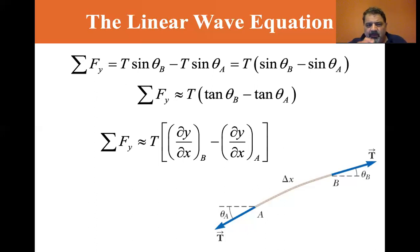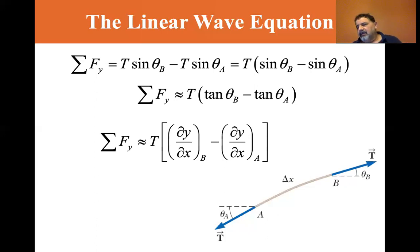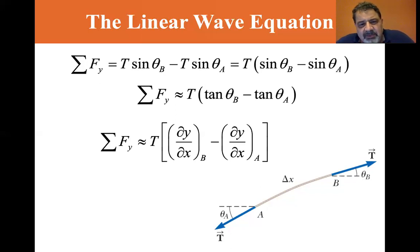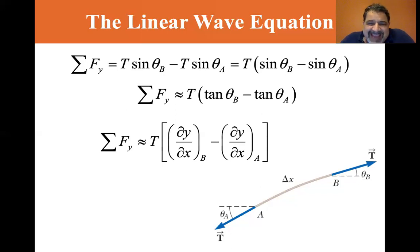If you imagine undergoing an infinitesimal displacement, you have a little vector that's dx·i plus dy·j, and the tangent of that angle with respect to the x-axis is dy/dx. Since we're doing a derivative with respect to time, we use partial derivatives. So the sum of the forces in the y-direction equals T times (∂y/∂x)_B minus (∂y/∂x)_A.